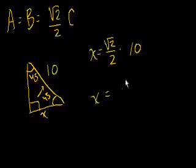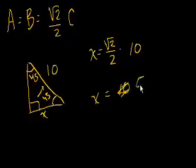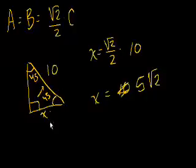So x is equal to 5 square roots of 2 — that's 10 divided by 2. So x is equal to 5 square roots of 2.